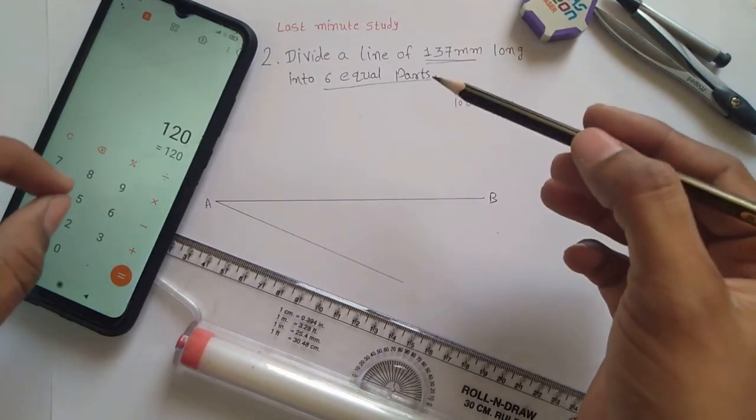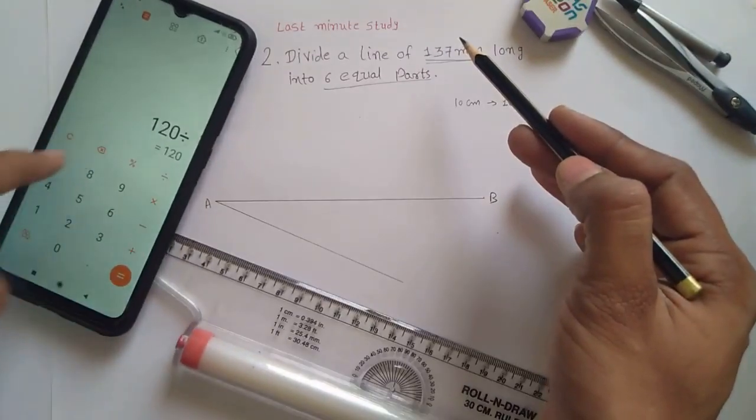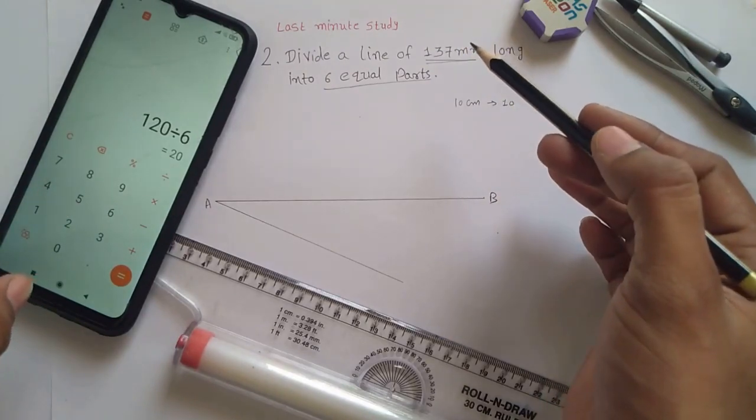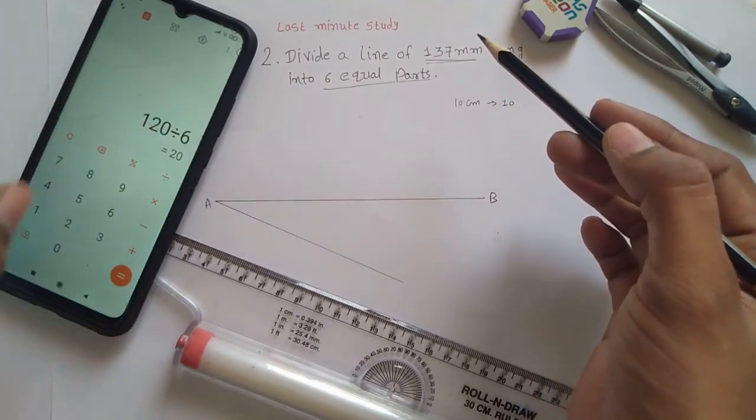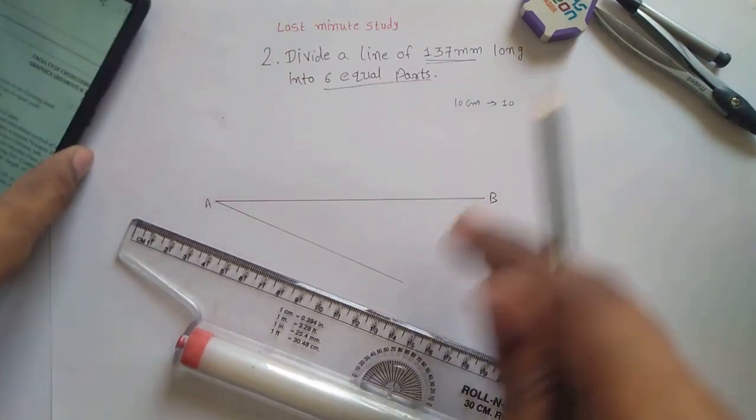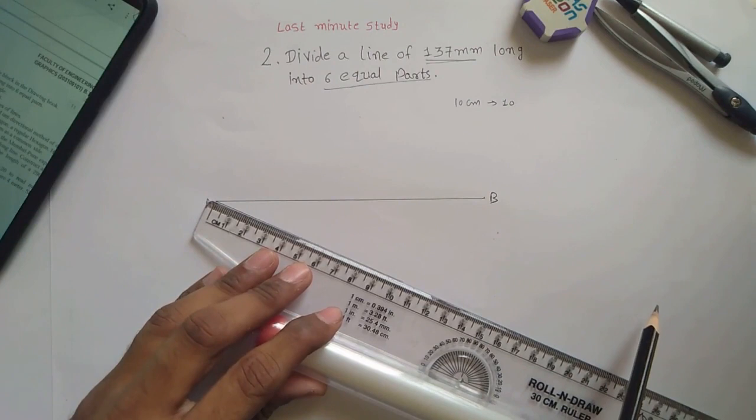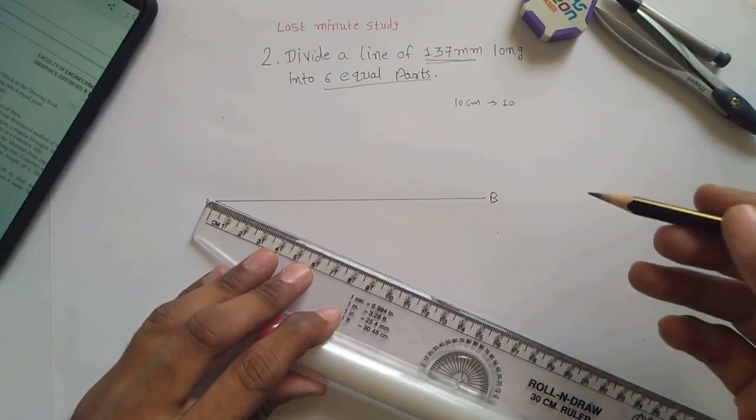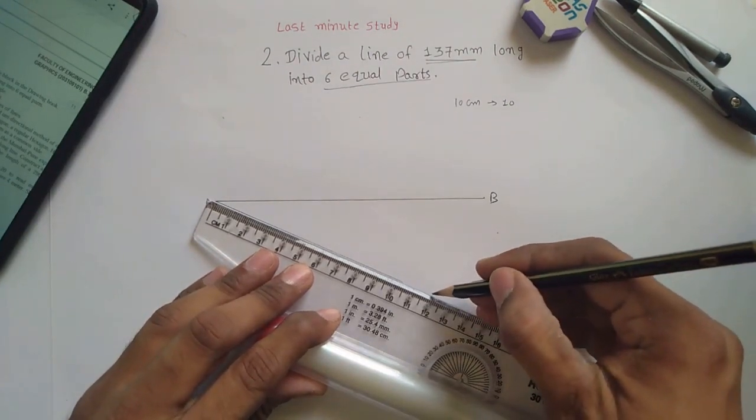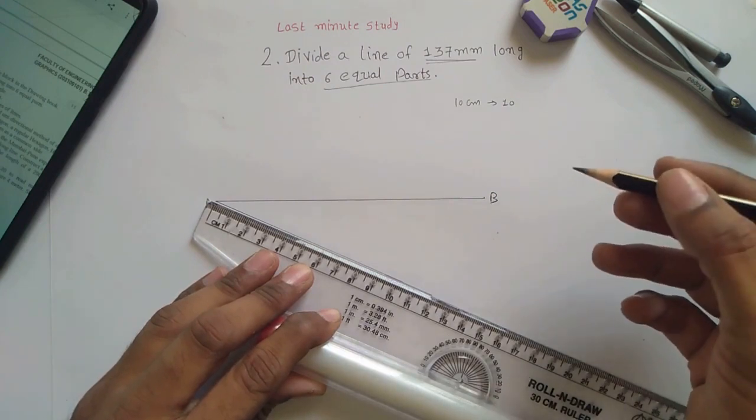120 is nearer to 137 and can be divided by 6 very easily, 20 mm that means 2 centimeters. So you have to choose 120 mm at an angle of nearer to 30 degrees. So this is 120 mm.